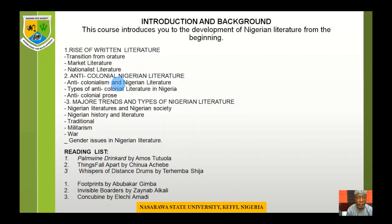Item number two, we are going to look at anti-colonial Nigerian literature. Under this item, we are going to look at anti-colonialism in Nigerian literature, types of anti-colonial literature in Nigeria, and anti-colonial prose. Item number three, we are going to look at major trends in types of Nigerian literature, including Nigerian literature in Nigerian society, Nigerian history and literature, traditional militarism, war, gender issues in Nigerian literature, and others.